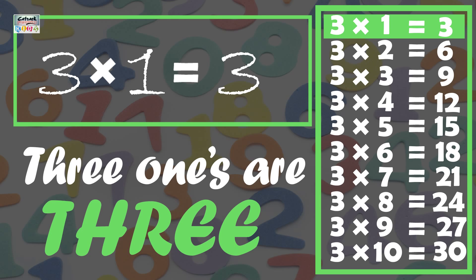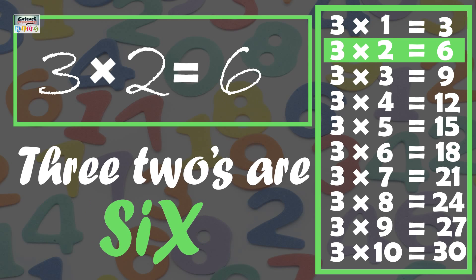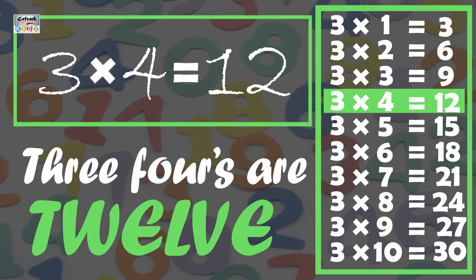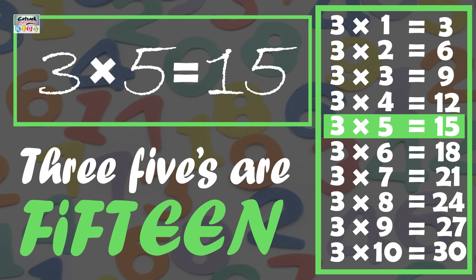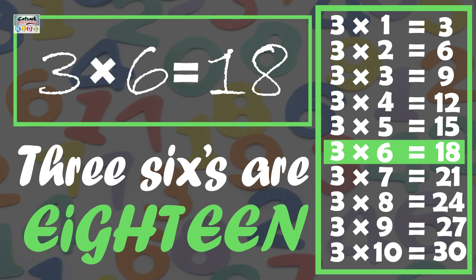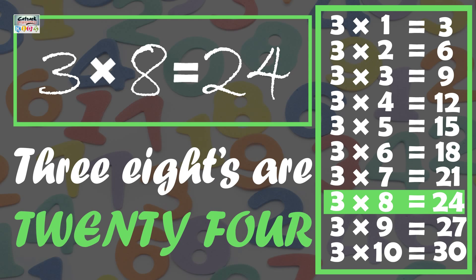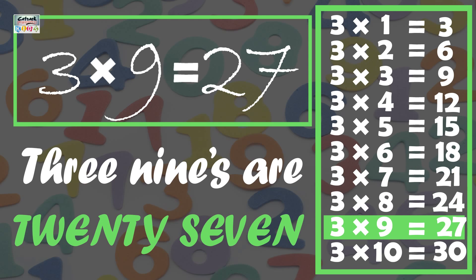3 ones are 3, 3 twos are 6, 3 threes are 9, 3 fours are 12, 3 fives are 15, 3 sixes are 18, 3 sevens are 21, 3 eights are 24, 3 nines are 27.